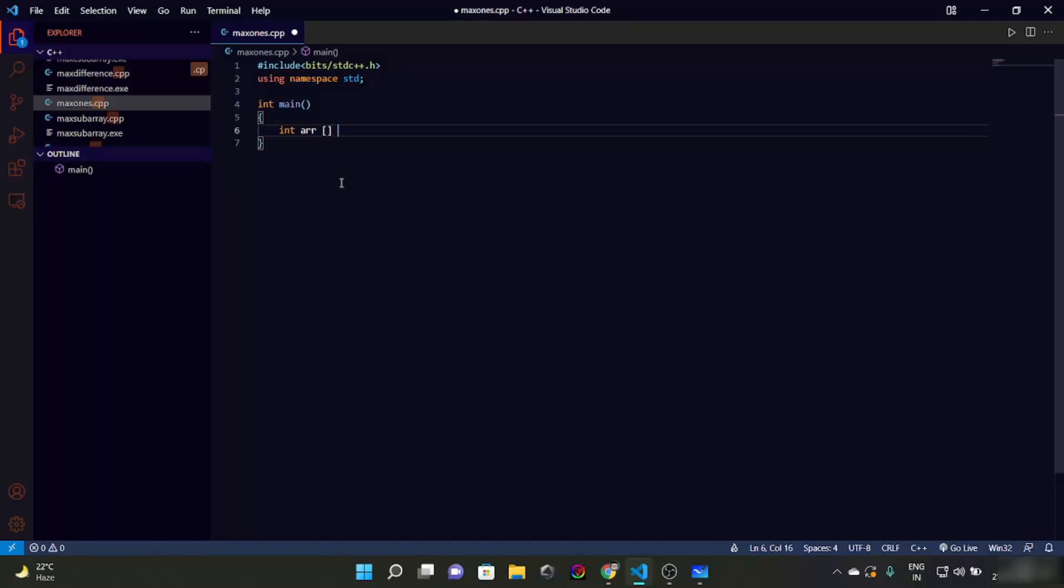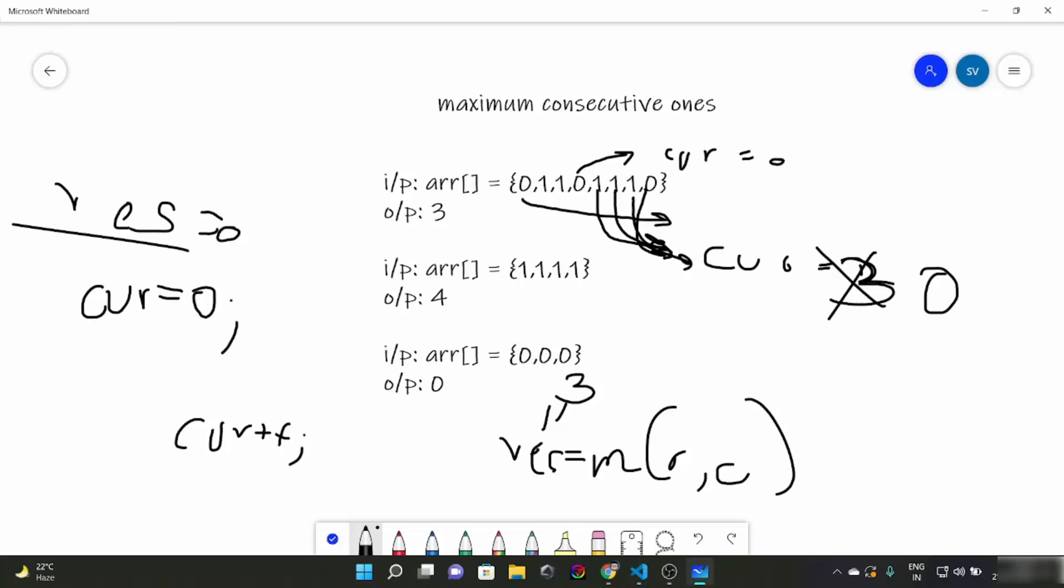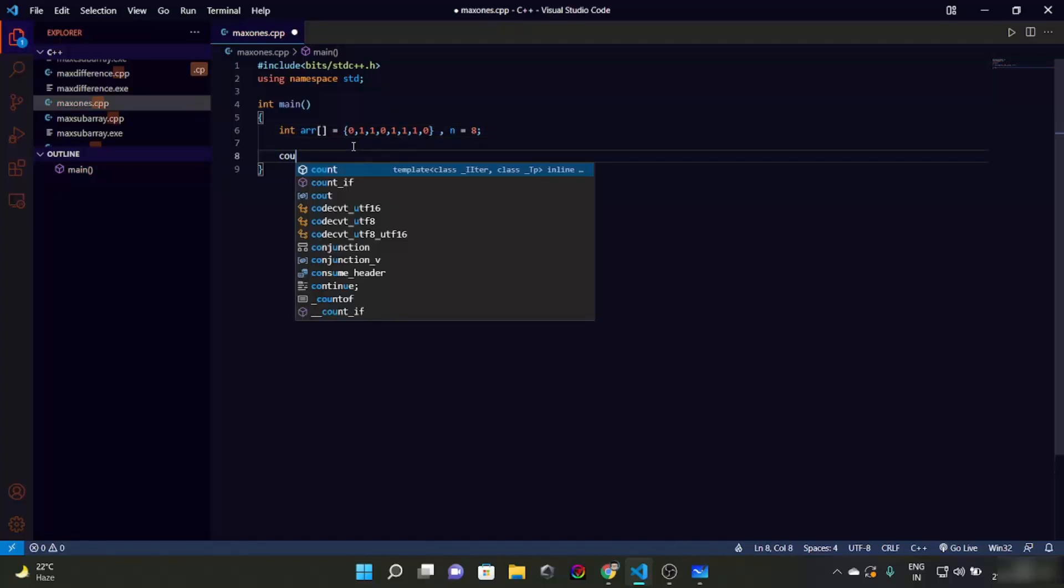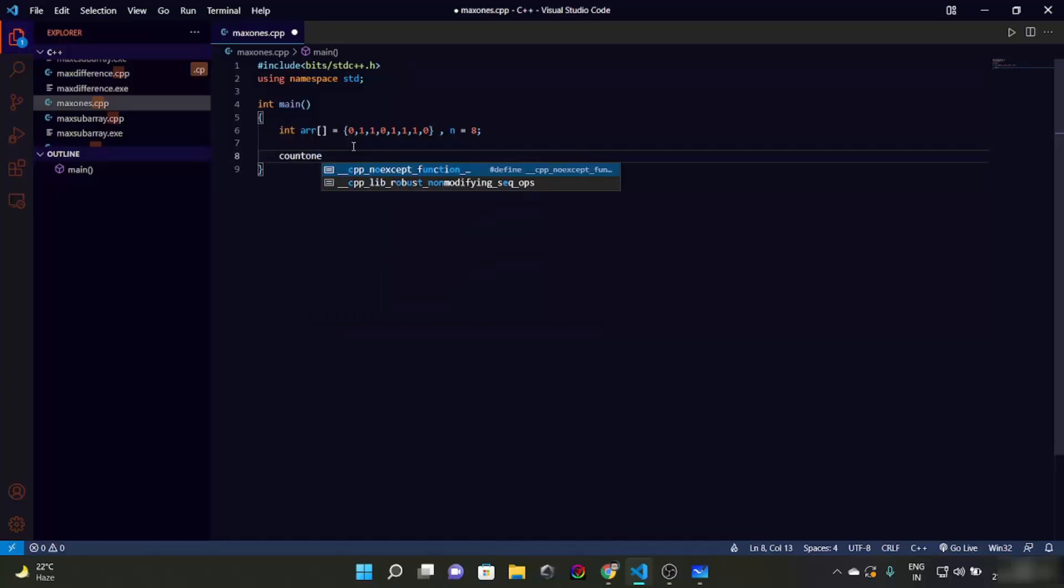We have int main, let's have int array: 1, 0, 1, 1, 0, 1, 0, 1, 1, 1, 0, triple 1, 0. Let's have n, how many? 1, 2, 3, 4, 5, 6, 7, 8, 10. Let's name our variable as count_one. We're going to have array and n.